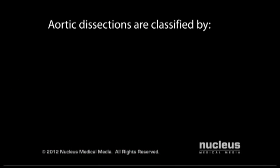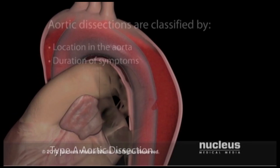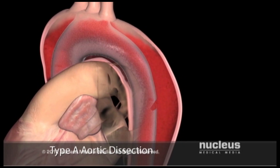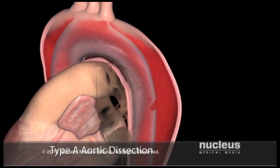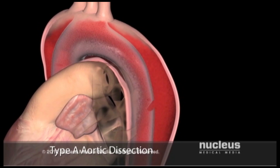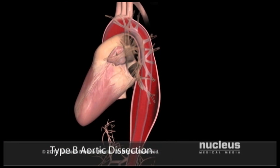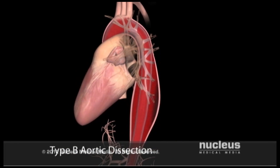An aortic dissection may be classified according to its location and duration of symptoms. In the Stanford system, if you have an aortic dissection in your ascending aorta, it is called a type A dissection. All other dissections are called type B.